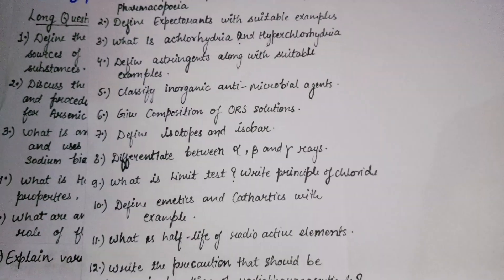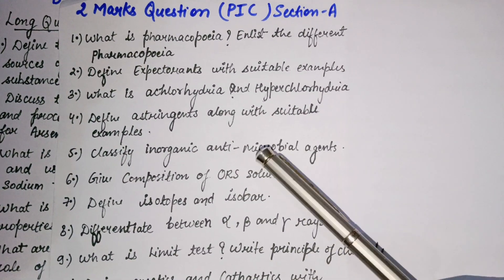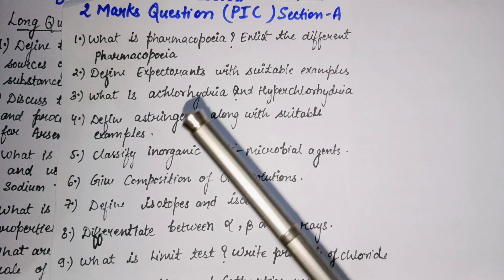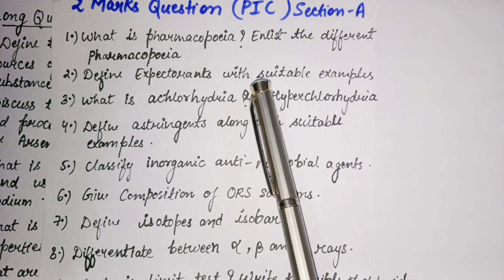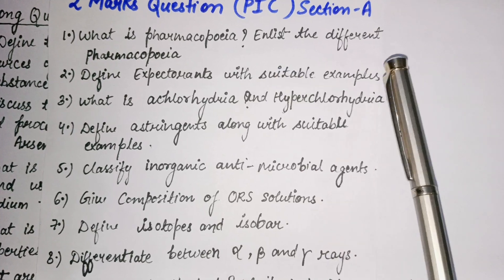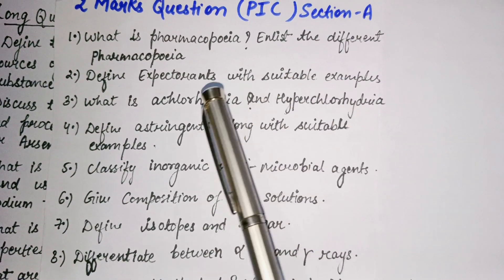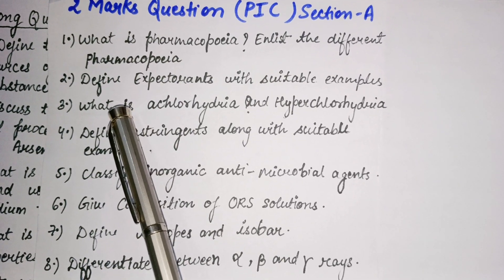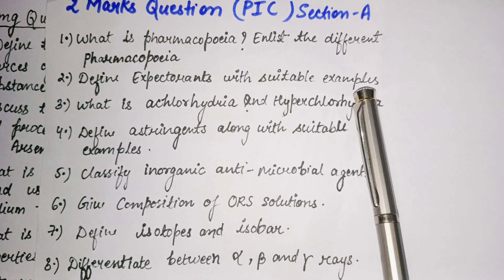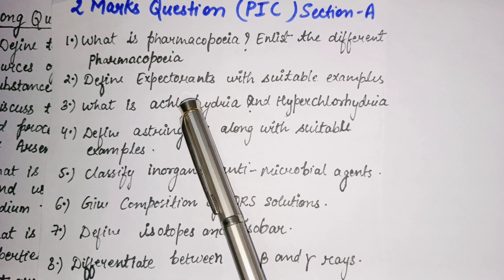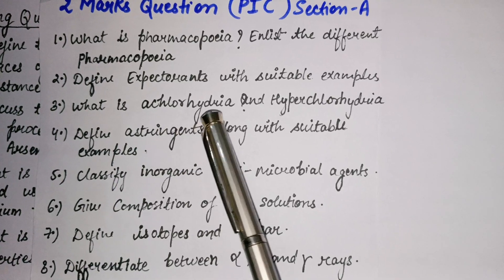Next are the 2-mark questions. The first question: what is pharmacopoeia? List the different pharmacopoeias and write everything about them. The second question: define expectorant with a suitable example — you can write two drug names as examples of expectorants.